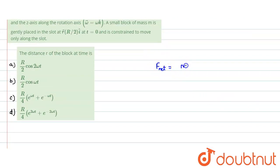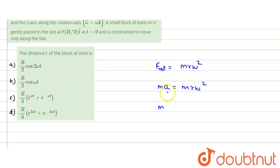Therefore, the net force equals mrω². Since force equals m times acceleration, the m's cancel, giving acceleration equal to rω². We write acceleration as v(dv/dr), so the equation becomes: v dv = rω² dr.